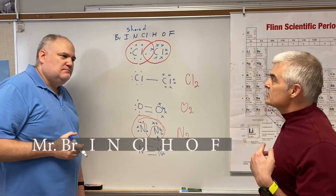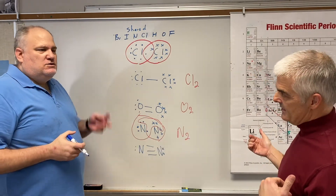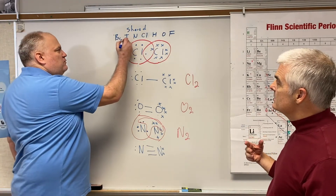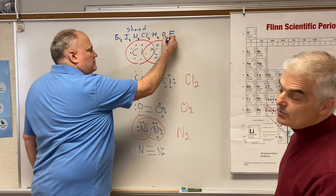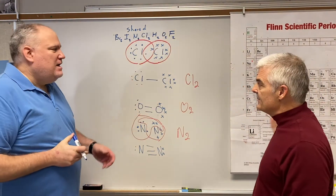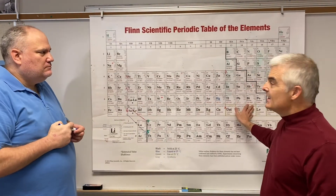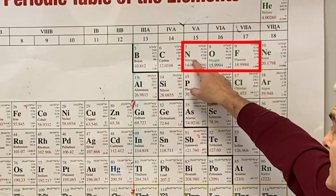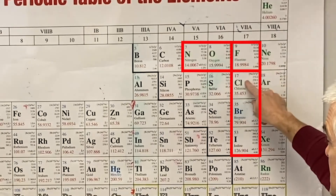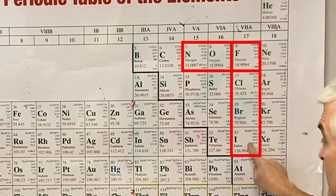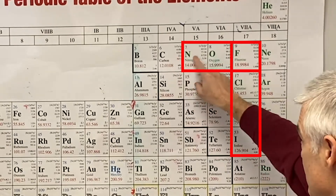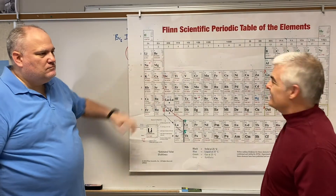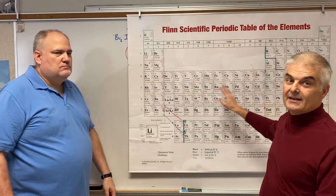These are called diatomic molecules — 'di' means two, 'atomic' means atom — so each one always exists as two atoms. When you write them by themselves: I2, Cl2, H2, O2. There are seven Brinkelhoffs, and on the periodic table they are N, O, F, Cl, Br, I — which forms the shape of a seven — plus hydrogen.